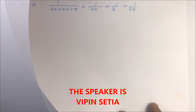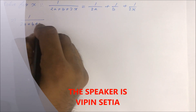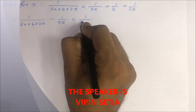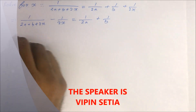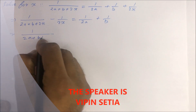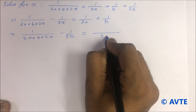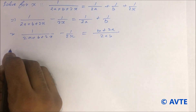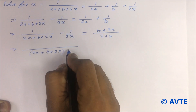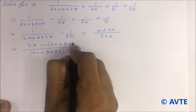So 1 upon 2a plus b plus 2x is transformed by moving 1 upon 2x to the other side. That gives us 1 upon 2a plus b plus 2x minus 1 by 2x equals 1 upon 2a plus 1 upon b. We take the common denominator, that is 2a plus b, on both sides: 2a plus b plus 2x into 2x, giving us 2x minus 2a plus b plus 2x.